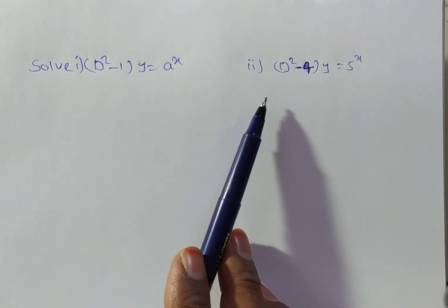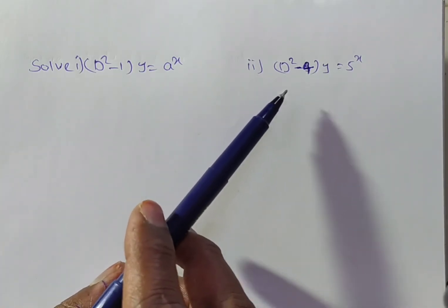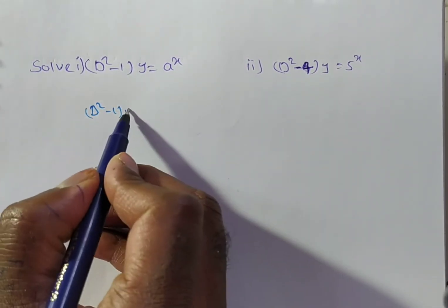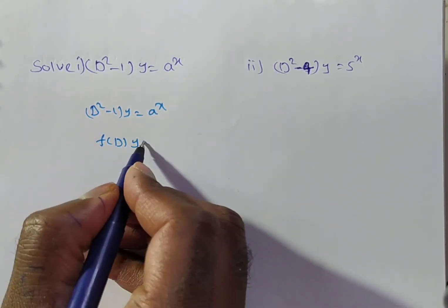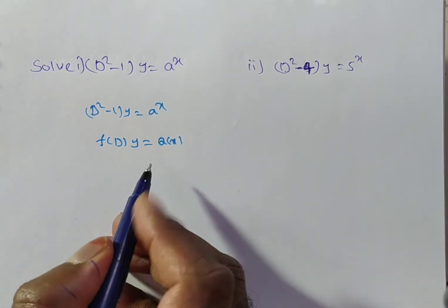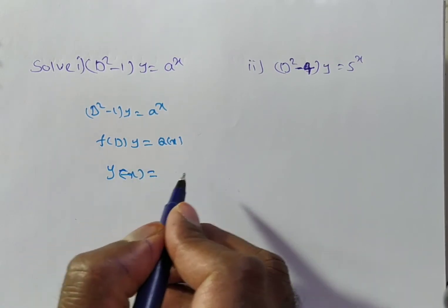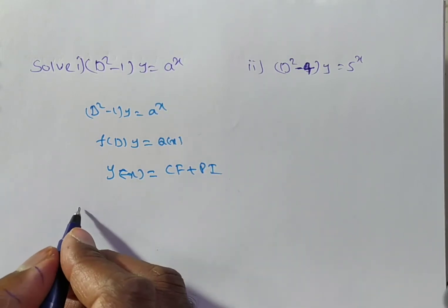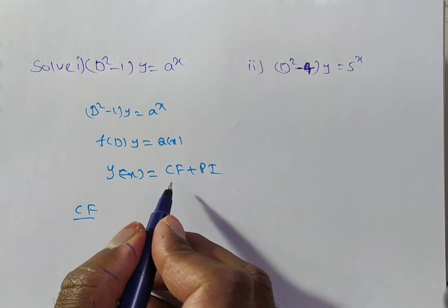These two are similar problems. I will solve the first problem; you try to solve the second. The given problem (D² - 1)y = aˣ is in the form f(D)y = Q(x). The solution of f(D)y = Q(x) is y(x) = complementary function plus particular integral.